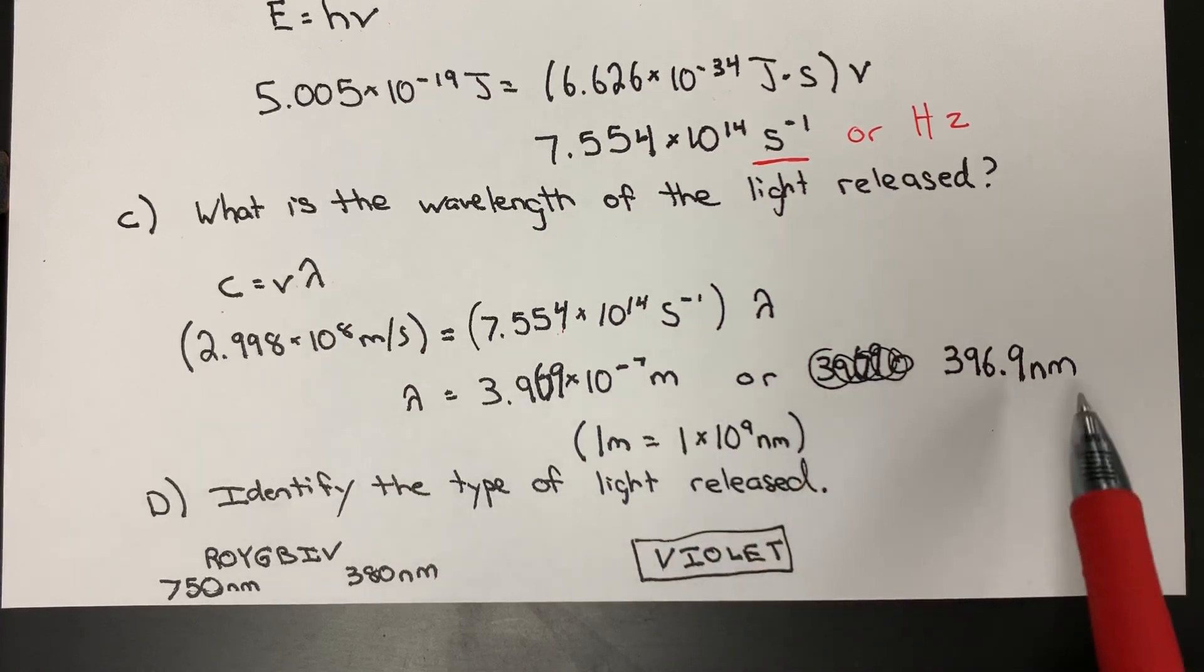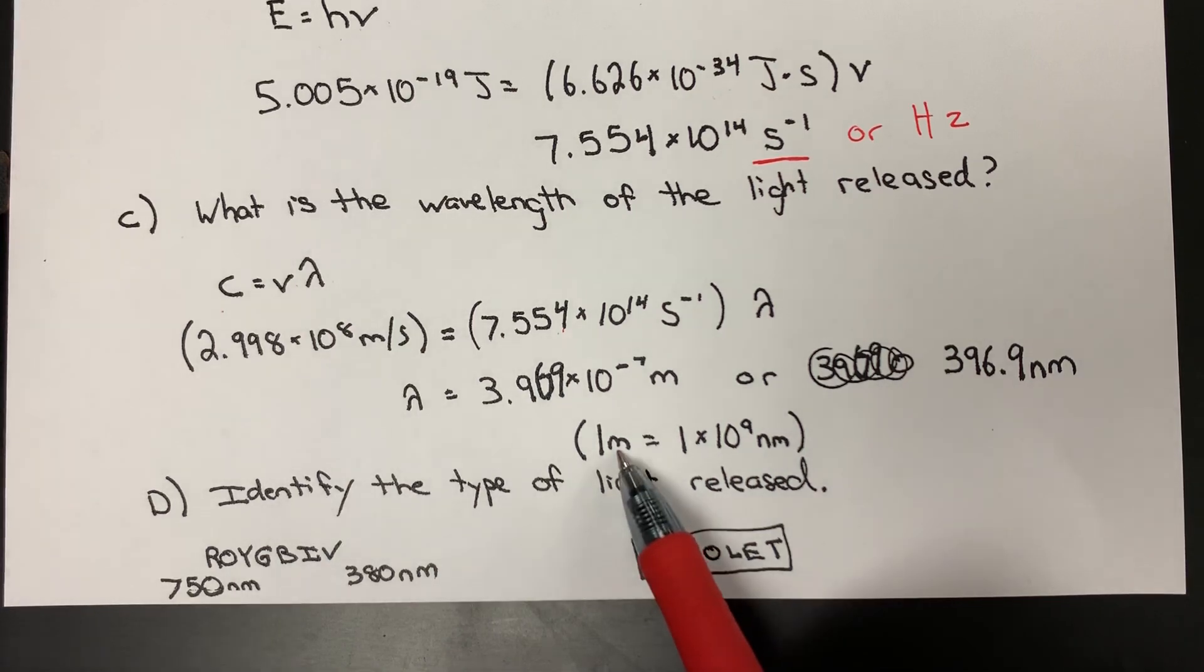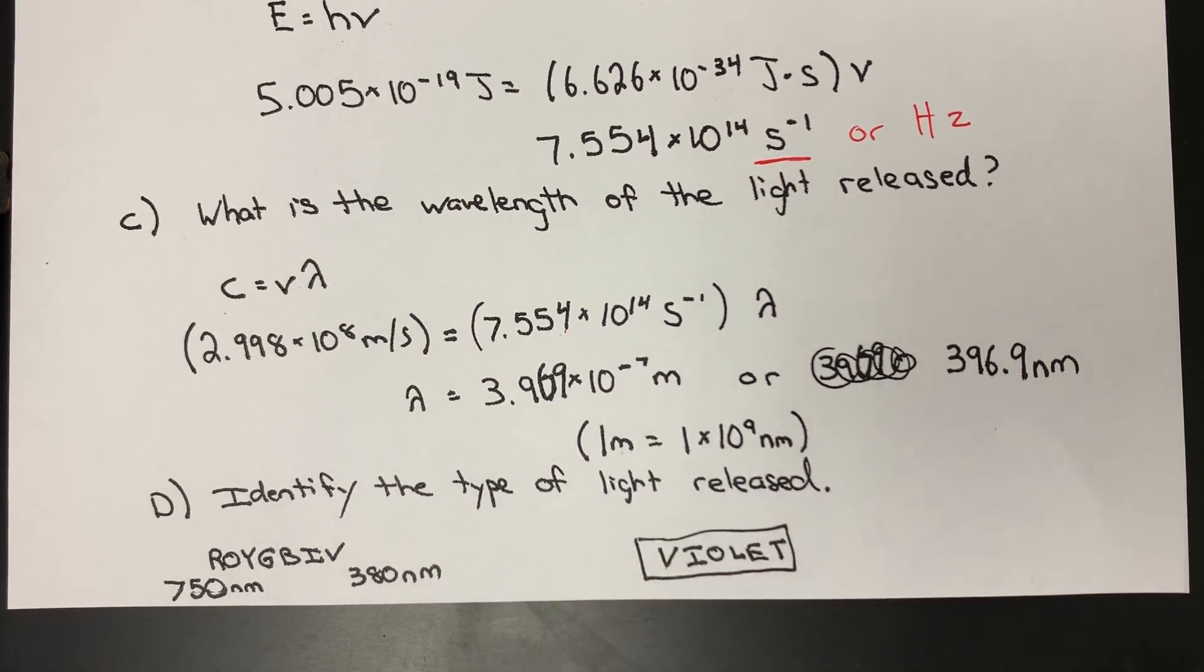We can convert that over to nanometers. That's going to make that number a little bit more friendly to use. The way that I did that was exploiting the following relationship: I know that one meter is equal to 1×10⁹ nanometers. So simple conversion there.